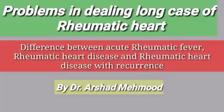If it is fulfilling Jones criteria, then it is a case of acute rheumatic fever, or in case of rheumatic heart disease, we will label it as a recurrence. Now, if you find a patient of eight years old and while taking history there is no previous history of admission, no previous history of joint pain, no previous history of cardiac symptoms in the form of orthopnea, PND, or edema, no previous history of any echo done, being admitted, or being given benzathine prophylaxis — then history rules out that no previous attack has occurred to that patient.